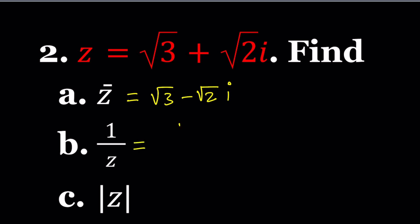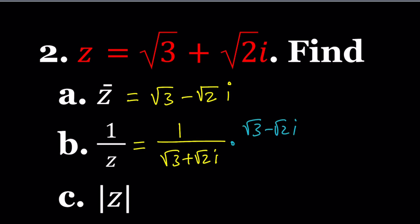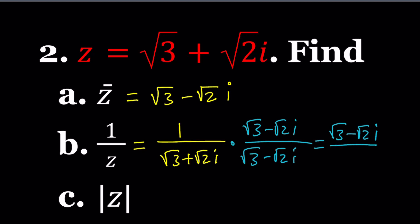1 over z means dividing 1 by that number. We use the complex conjugate, multiplying by root 3 minus root 2 i on top and bottom. The numerator stays the same since we're multiplying by 1. The denominator is a sum of two squares: 3 plus 2, which is 5. This can be written as root 3 over 5 minus root 2 over 5 times i.